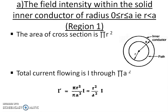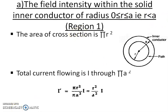The calculation of H is divided into variation of regions in the cable. We consider Region 1: the field intensity within the solid inner conductor, where 0 ≤ r ≤ a, that is r less than a.